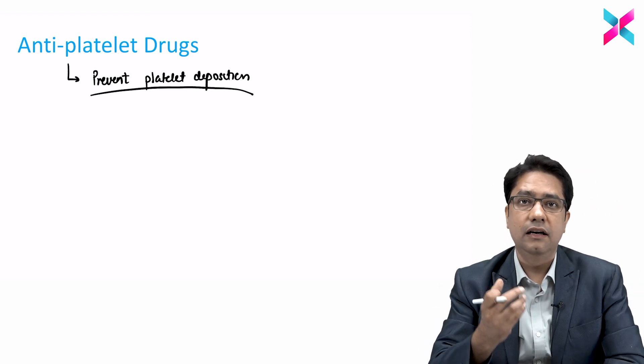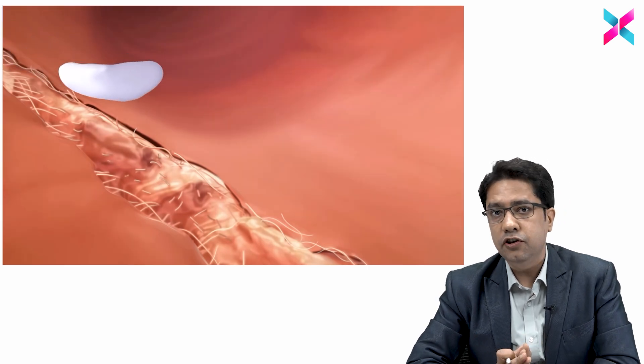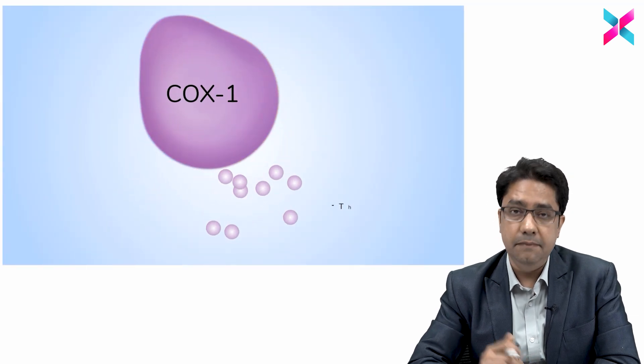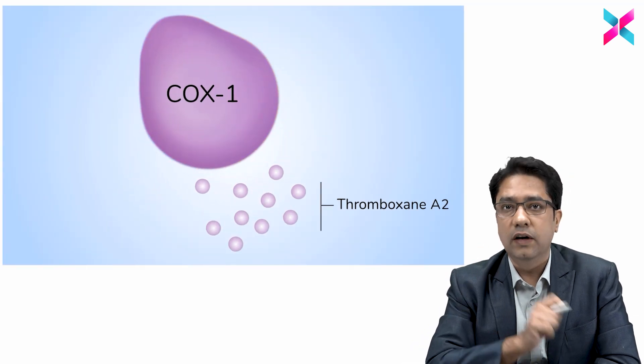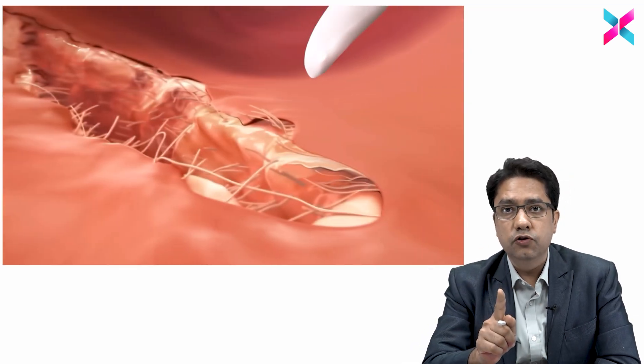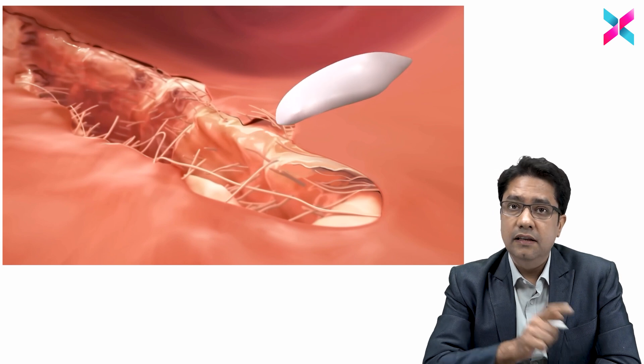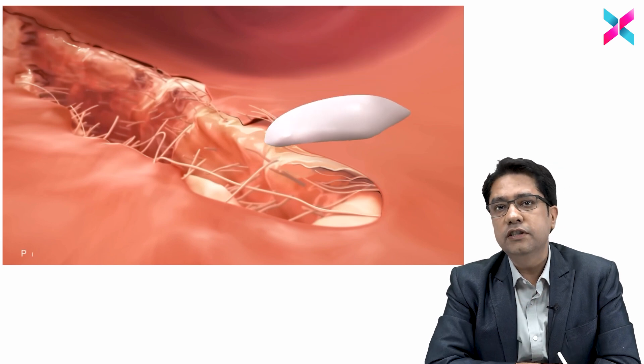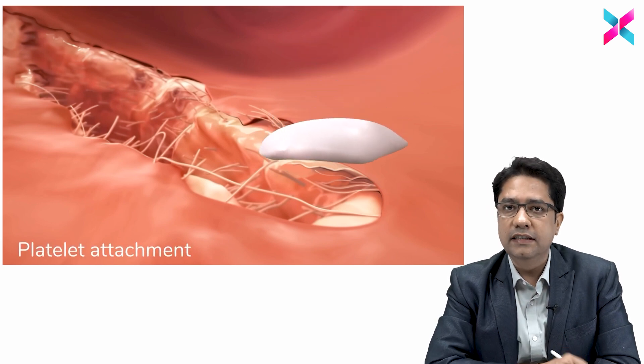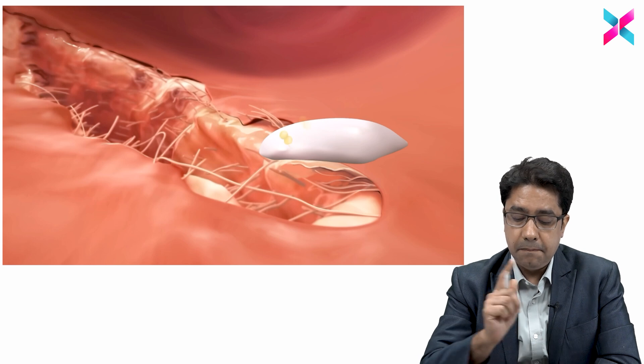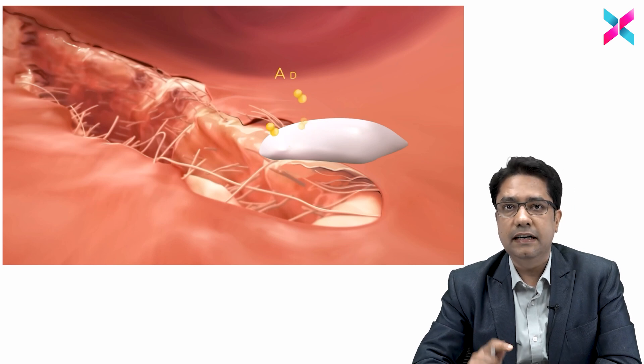Let's discuss how platelets function. First, platelets come and attach on a damaged blood vessel. Inside the platelet we have an enzyme called COX-1 which produces thromboxane A2. This thromboxane A2, produced by the COX-1 enzyme in the platelet, causes platelet attachment.